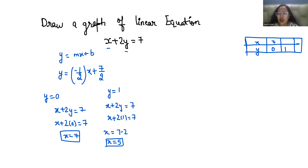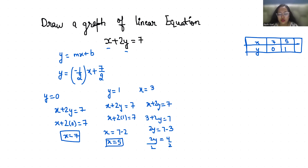You can use the value of x as well to find y. If I take x as 3: x plus 2y equals 7, so 3 plus 2y equals 7, 2y equals 4, y equals 2. So whenever x is 3, y is 2. That's how you can put any value and find the other.